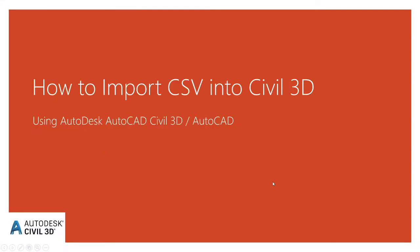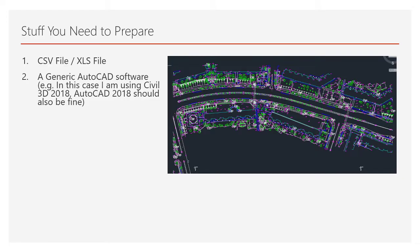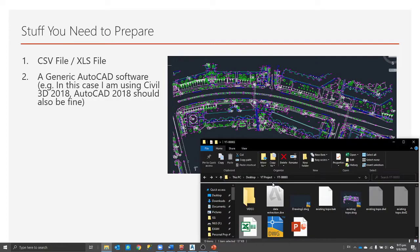Good evening. Today I will show you how to import a CSV file into a Civil 3D DWG format file. To start off, you need to prepare your survey data, which will normally be in the form of a CSV file or an XLS file. You also need to prepare your AutoCAD software — in my case I'll be using Civil 3D 2018. AutoCAD 2018 should also be fine, but since we will be working with Civil 3D in the future, I'll be demonstrating in Civil 3D.